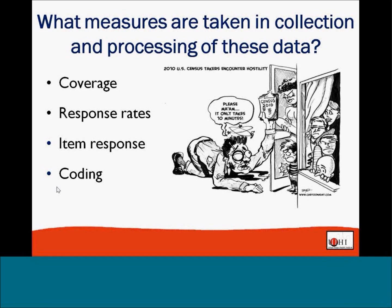High coverage really helps when we think about concerns over selection — is this population representative? Also related is response rates. When a survey has only say 20% of intended respondents respond, those 20% are often very different from the 100% we're striving for. Census works hard to get people to respond and achieve high response rates, which is really important in terms of data quality.